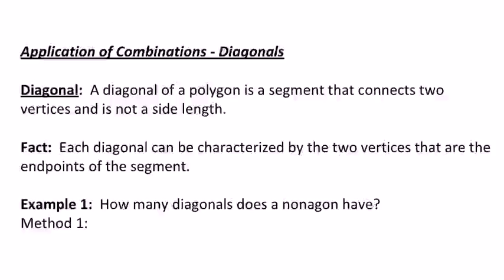It's talking about the diagonals of a polygon, and a diagonal of a polygon is just a segment that connects two vertices and is not a side. So you can include sides when you're talking about polygons, but any other two vertices that are connected is called a diagonal of the polygon.